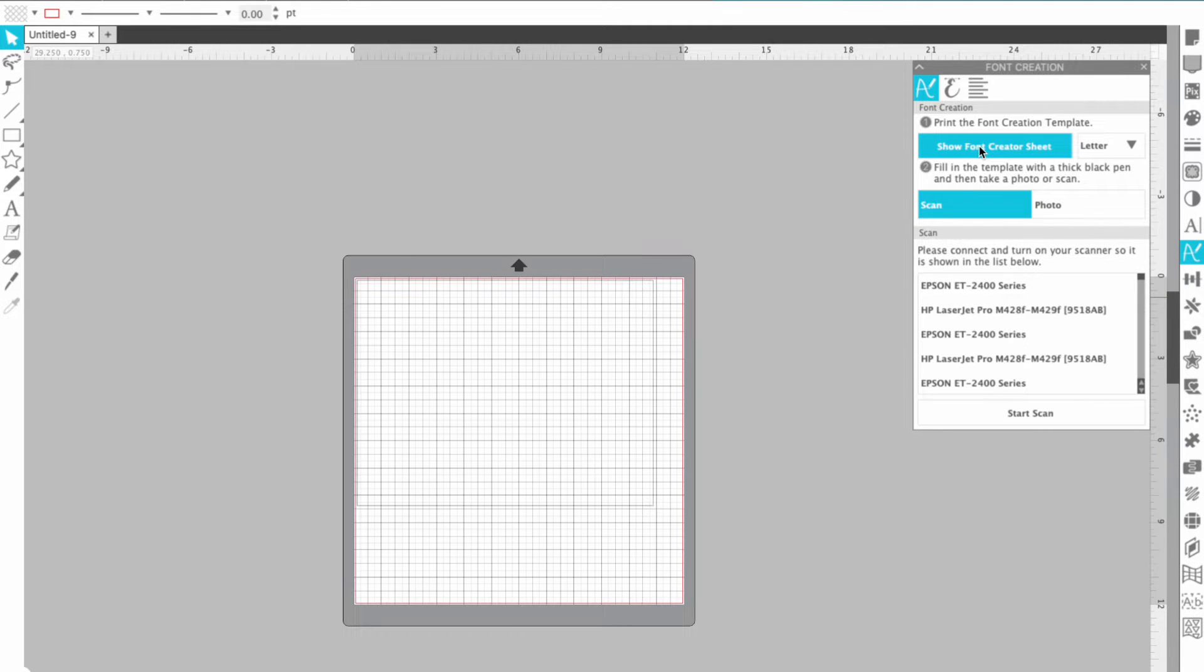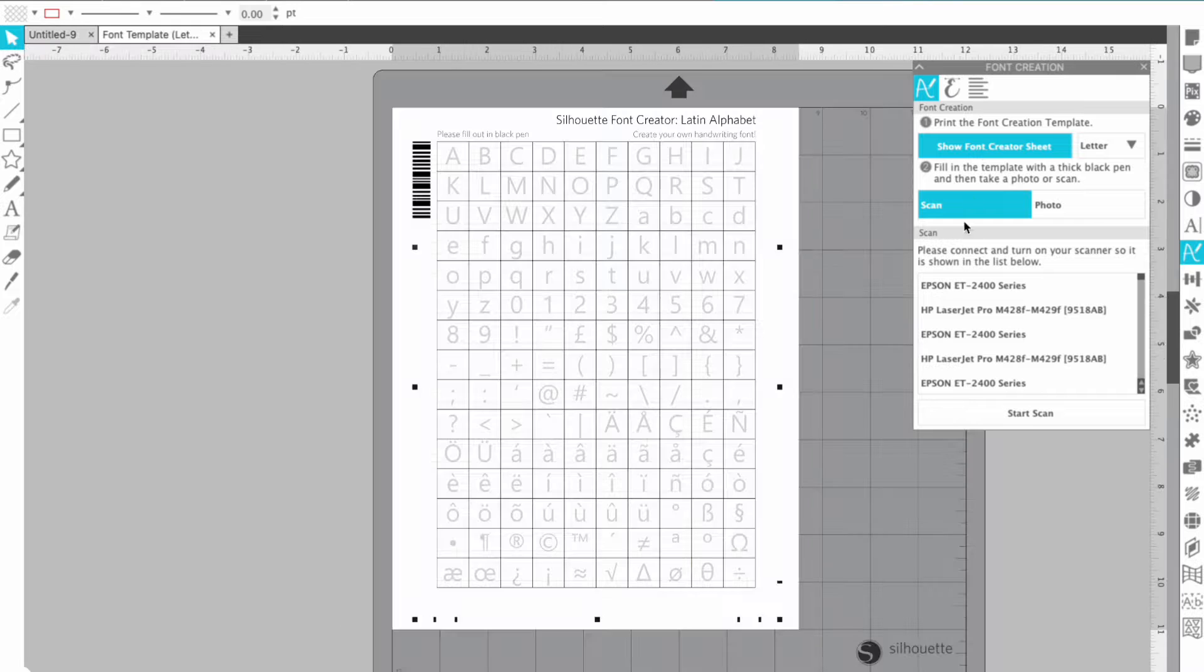So the first thing you want to do is show the font creator sheet. Now you can change the size of this here so letter or A4 whatever your printer is and then the first thing you're going to want to do here is print it. So I'm going to go up to the corner here and say send to printer.